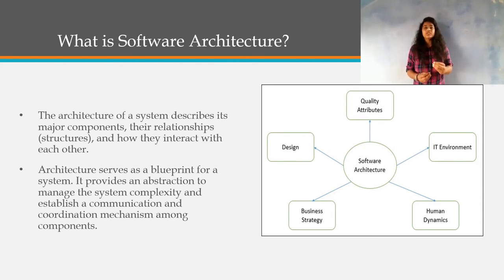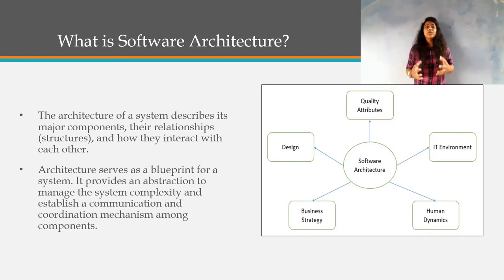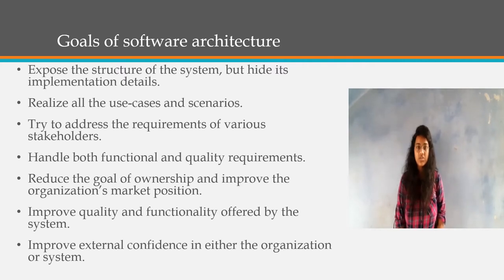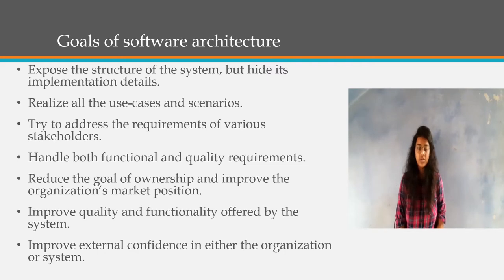The architecture of a system describes major components and the structure. We can say that architecture is the blueprint of a system. The main goal of Software Architecture is to understand the structure of a system and hide the implementation.